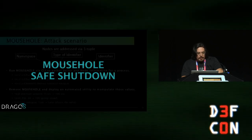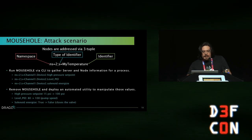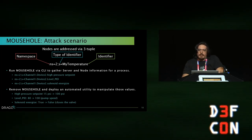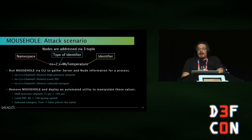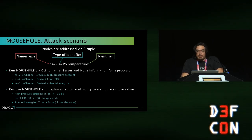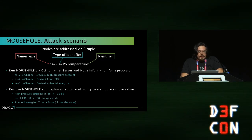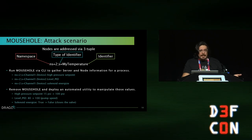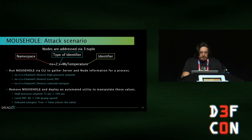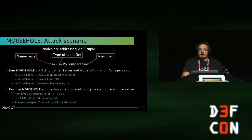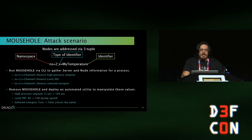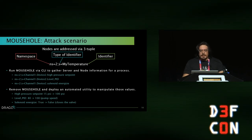To attack this with an automated utility, we run Mousehole via CLI to gather server and node information. We need the high pressure set point — set to 15, we increase it to 100. The pump speed was set to 80 by default — we increase it to 100. And we close the valve by changing the solenoid energize attribute from true to false.